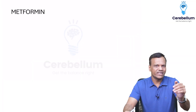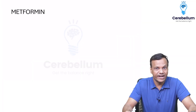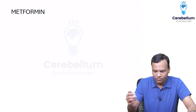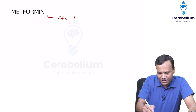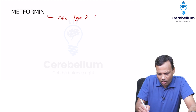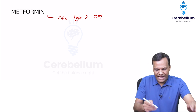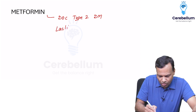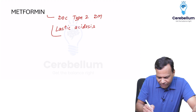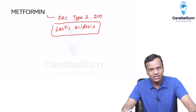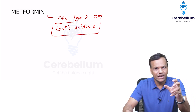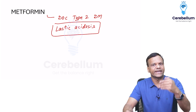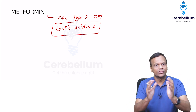Hello everyone. Today's mnemonic is related to metformin. We all know metformin is a drug of choice for type 2 diabetes mellitus. But the problem is it can cause lactic acidosis. Although this side effect is very uncommon, wherever it occurs it is very dangerous. So we should avoid metformin in those people where there is increased risk of lactic acidosis — it is contraindicated in those people.